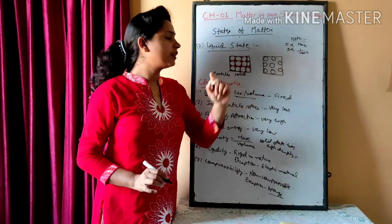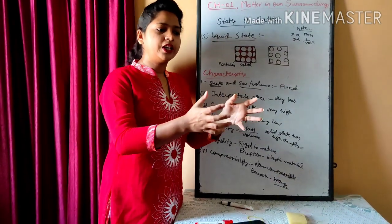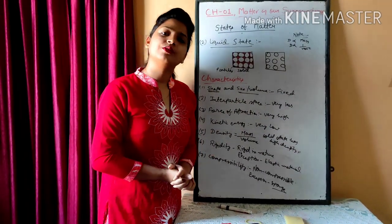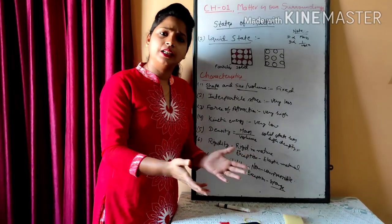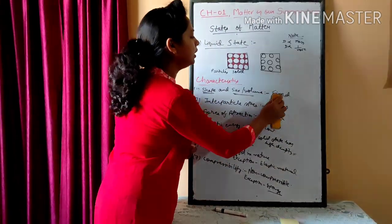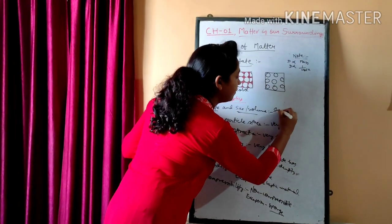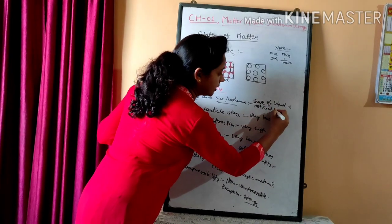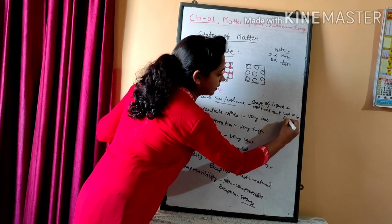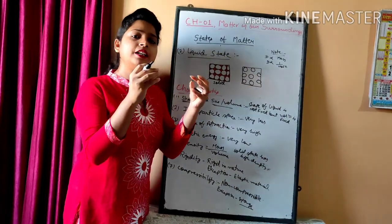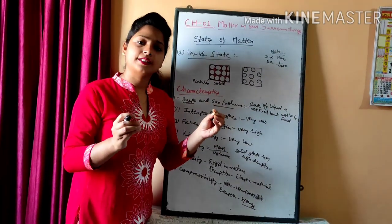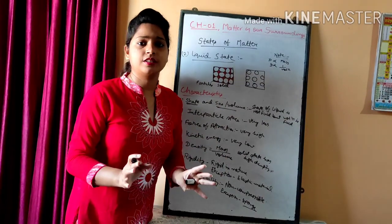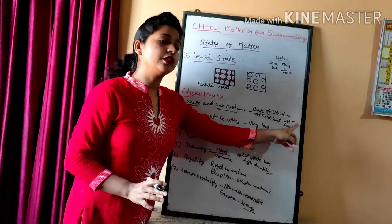What about the shape and volume of liquid state? Consider one liter of water in a mug — if you pour it into a bottle, the shape of the water changes. Similarly for lemon juice or milk. So the shape of liquid state is not fixed. But the volume is fixed — one liter of water remains one liter regardless of the container. Only the shape changes.